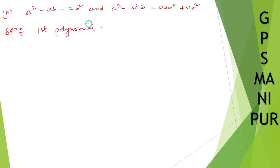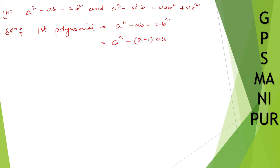The first polynomial is equal to a square minus ab minus 2b square. I can split the middle term: since 2 minus 1 gives the middle coefficient, I write a square minus 2ab plus ab minus 2b square.